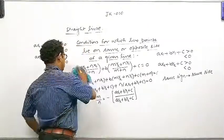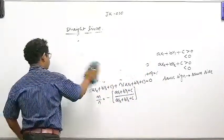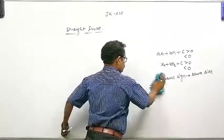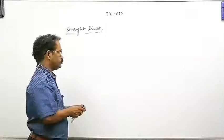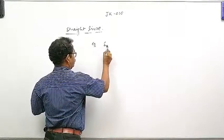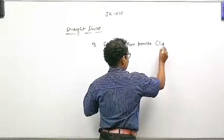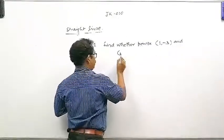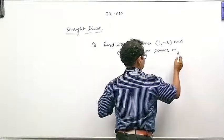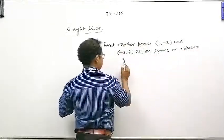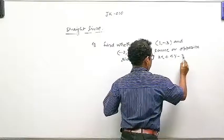Easily we can learn it. एक simple example कर लेते हैं: Find whether points (1, -3) and (-2, 5) lie on same or opposite side of the line 2x plus 4y minus 3 is equal to zero.